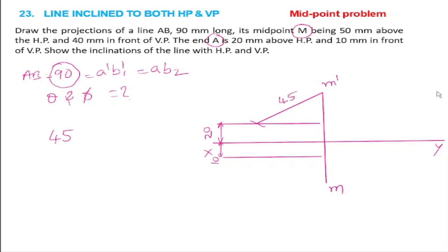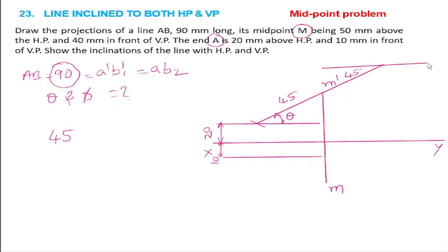The 45mm with end A's inclination gives the true inclination — that is the value of theta. With the same theta inclination, we extend it for another 45mm so that the entire line length is 90mm. Then we can draw a locus line and find B1 dash.